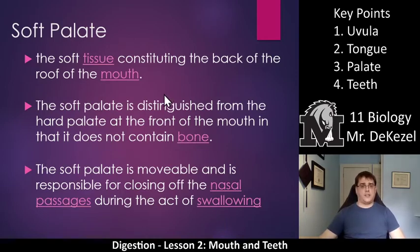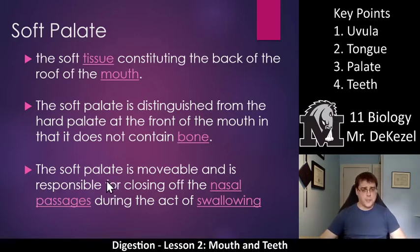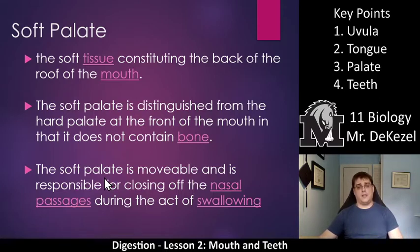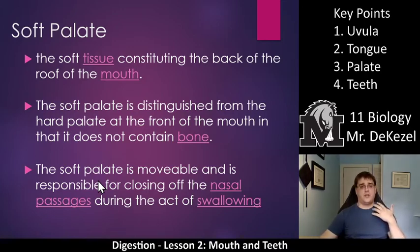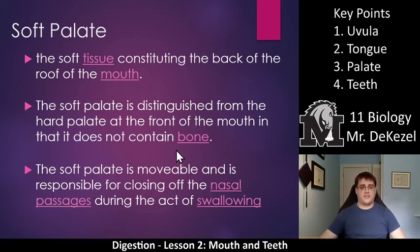So the soft palate — you can go back to your diagram to see which part this is. It is the back part of the roof of your mouth, right next to your uvula, which is the little dangly thing. It is the soft tissue constituting the back of the roof of the mouth. The soft palate is distinguished from the hard palate, which is more the front of the roof of your mouth, in that it does not contain a bone. You can feel the roof of your mouth — it has a bone, there are a bunch of ridges on it. And then at the back it's kind of soft, and that might be the part that swells up when you have a cold or the flu. That is the soft palate — it does not contain a bone.